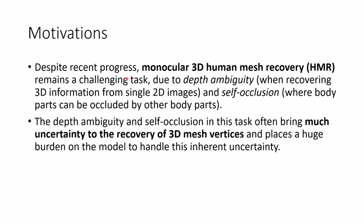Despite recent progress, Monocular HMR remains a challenging task due to depth ambiguity when recovering 3D information from single 2D images, and self-occlusion where body parts can be occluded by other body parts. The depth ambiguity and self-occlusion often bring much uncertainty to the recovery of 3D mesh vertices and place a huge burden on the model to handle this inherent uncertainty.